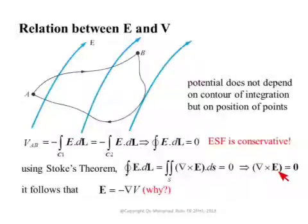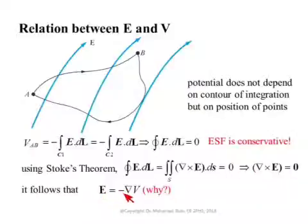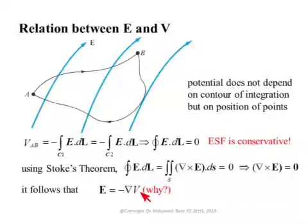When a vector has a zero curl, it can be written as the gradient of a scalar function, because the curl of the gradient of a scalar function is always zero. So when the curl is equal to zero, we can write E as equal to minus the gradient of V, where V is the scalar potential we talked about. This is one approach to show that E equals minus gradient V.